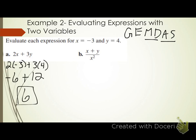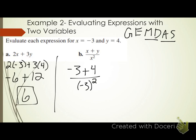How are we feeling about this so far after three examples? Pretty easy? Everyone feeling pretty confident? Letter B — same step we've been doing: replace your variables with the numbers they equal. I'm replacing x with negative 3 and y with 4.